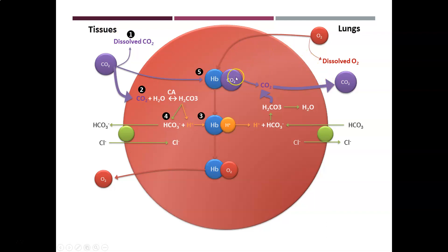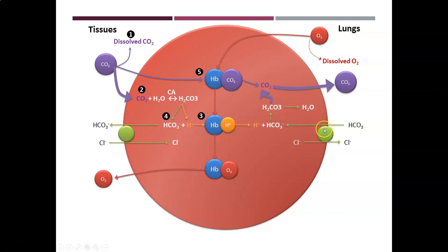CO2 picked up at the tissues can tag onto the globin portion of hemoglobin — not the same site as oxygen, but on the protein portion. Some CO2 is carried this way, but it is predominantly carried as bicarbonate. When CO2 arrives at the lungs, it either undocks from hemoglobin and becomes CO2 to be exhaled.